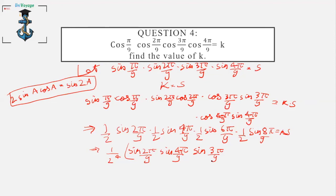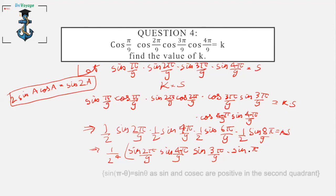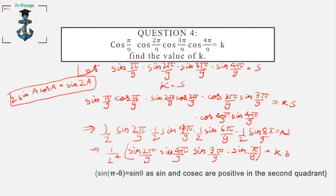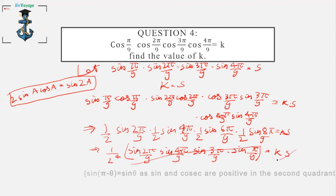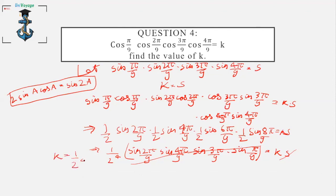Using the identity sin(π - x) = sinx: sin(6π/9) = sin(3π/9) and sin(8π/9) = sin(π/9). So the product sin(2π/9)·sin(4π/9)·sin(6π/9)·sin(8π/9) equals the s term, which cancels, leaving k = 1/2⁴ = 1/16.